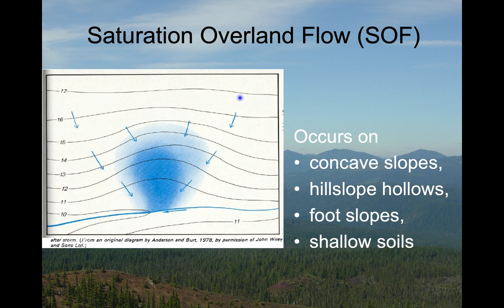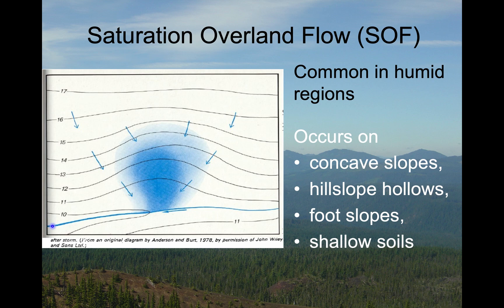The shape of the hillslope matters. This illustration shows an area of saturation developing where flow is converging — think of the space between two hillslopes, a valley head, or hollow — and saturation is also more pronounced along the stream channel. The places where saturation overland flow develops first are concave slopes, hillslope hollows, the foot of the slope, and places with shallow soils. Saturation overland flow is much more common in humid regions with relatively low-intensity but prolonged or frequent rainfall that can build up subsurface water levels until the water table reaches the land surface.